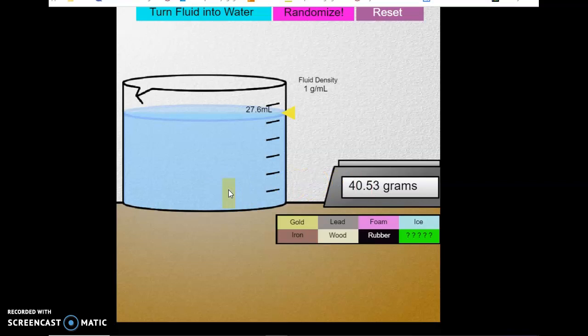I want you to repeat this step for each and every material. Now change this material to lead. Once you have the lead material, do the same steps. Weigh it, then put it in this liquid, see the volume change, and find out the density.